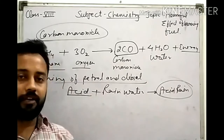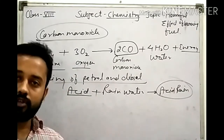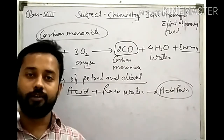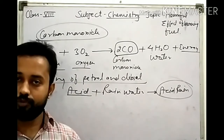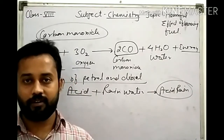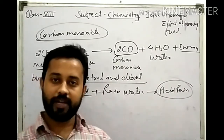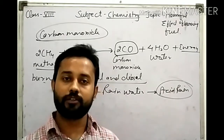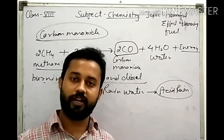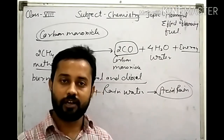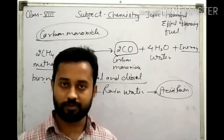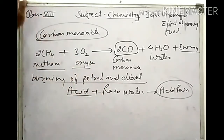Acid rain also affects plants and crops. When you are riding a bike and the fuel is burning, toxic and harmful gases are released and their effects accumulate. We should use measures to reduce excess emissions.